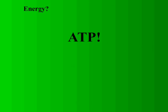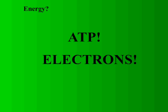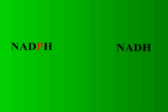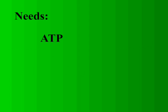When I say energy, you should already be thinking of ATP. That's right — the plant needs ATP to create glucose. It also needs electrons, and the plant uses a special molecule called NADPH to carry the electrons. You may get this confused in the next unit with a similar molecule called NADH. Just remember that the P is for photosynthesis. So the plant needs ATP and NADPH to create glucose.